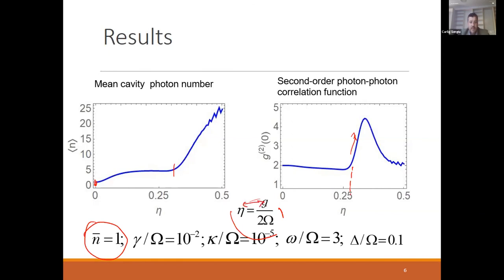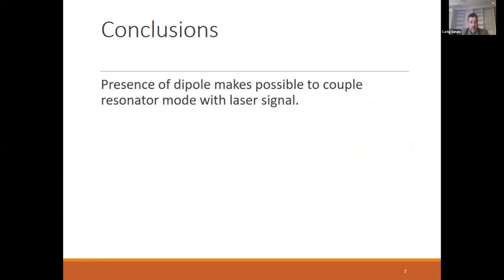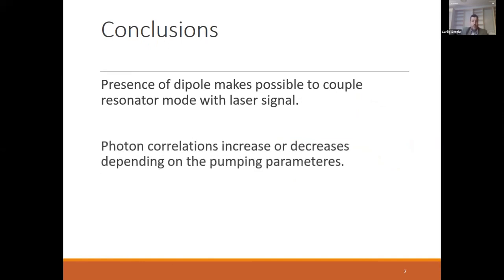But eta is proportional to G, where G is responsible for d1 minus d2. In this case, if you have different dipoles for each level, this increases the mean photon number. You can say that the presence of the dipole couples the resonator mode and the laser signal that excites the atom, and we also saw that the correlation increases or decreases depending on the pumping parameters.